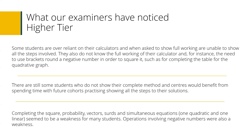There are still students who don't show their complete method, and centres would benefit from spending time with future cohorts practising showing all steps of their solutions. Completing the square, probability, vectors, and simultaneous equations — one quadratic and one linear — seem to be weaknesses for many students. Operations involving negative numbers were also highlighted as a weakness. These were the key trends Pearson wanted us to highlight today.